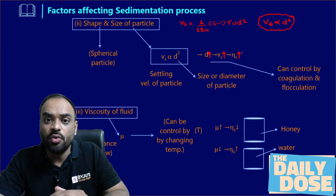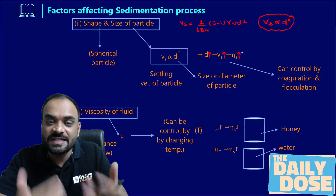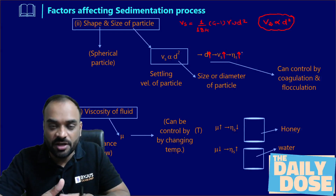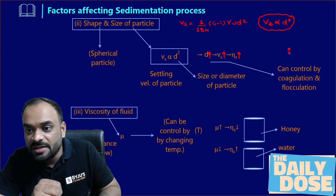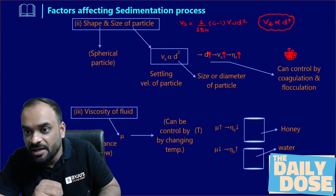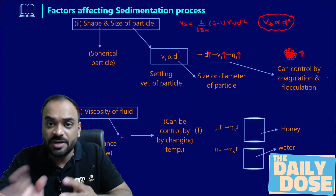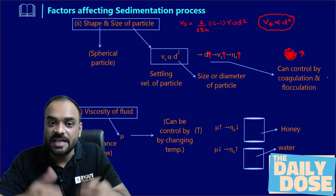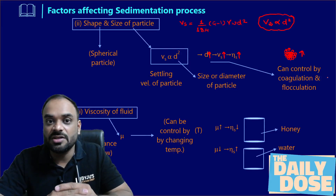The question is: how can we increase particle size in our treatment plant? The process we use is coagulation and flocculation. We add a coagulant into the water so that it generates some sticky material, and over that sticky material, smaller particles attach. The smaller particles attract onto it and ultimately the size of the particle gets increased. This process — coagulation and flocculation — allows us to control the size of particle in our water treatment plant.